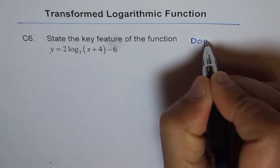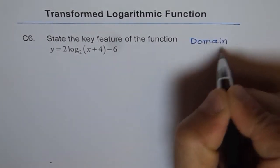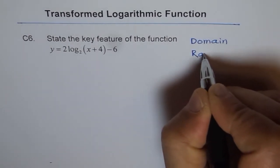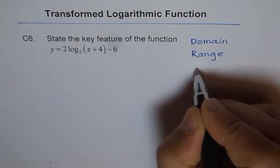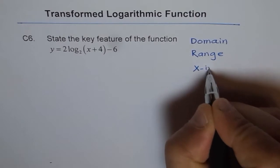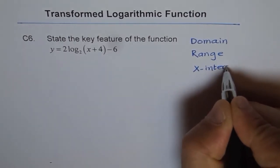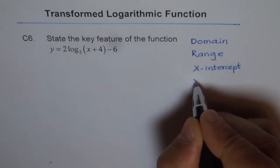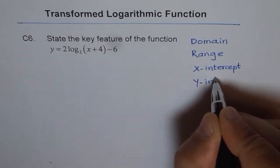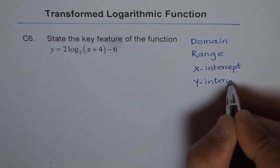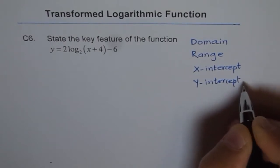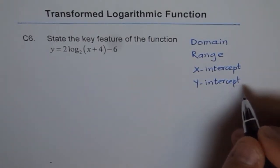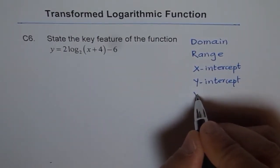Domain, range, and we have x-intercept, y-intercept. There may not be a y-intercept if possible. And a vertical asymptote.